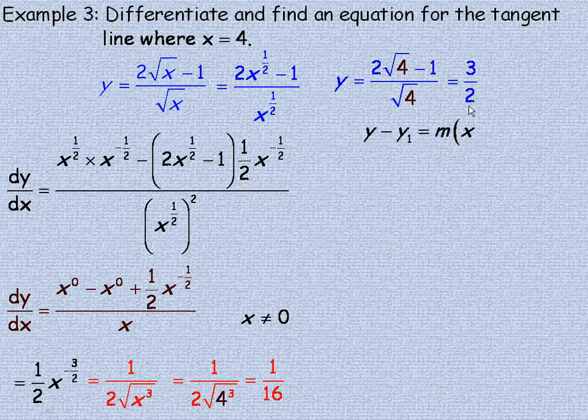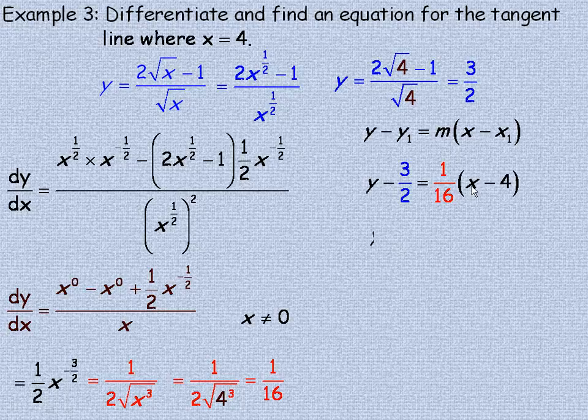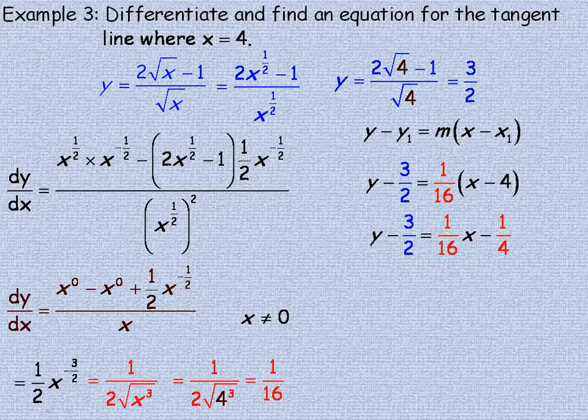So in my point slope form equation, I'm going to put the 1/16 in place of m. That's my y, and of course x1 is 4. So I would expand the 16th in here. A 16th x times x is a 16th x. And a 16th times negative 4 is this.